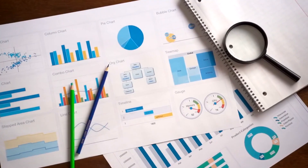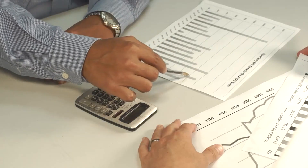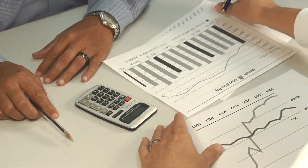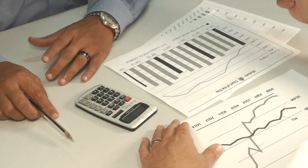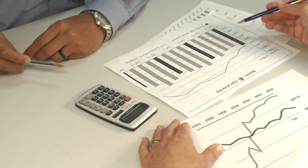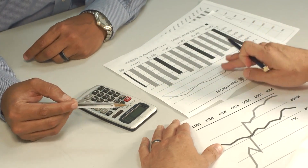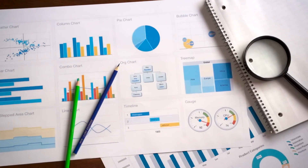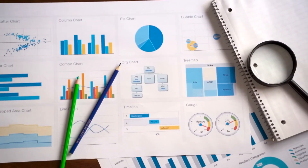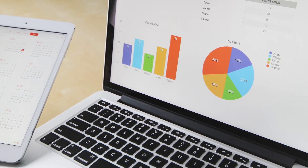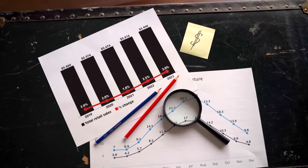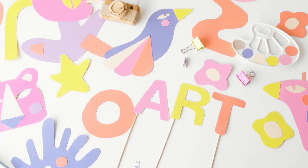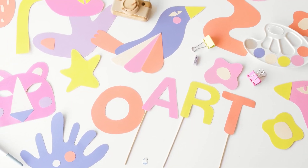Data visualization: use graphing tools and applications to help learners analyze and interpret data. Visualizing data through charts and graphs can assist learners in drawing conclusions and making connections between English and social studies concepts.